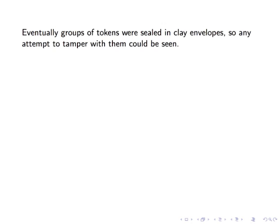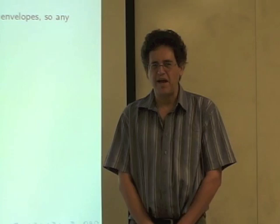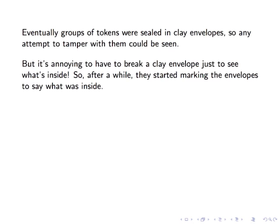But eventually these tokens were sealed in clay envelopes so that you couldn't tamper with them without busting the envelope and becoming visible. So if you wanted to change your mind about how much grain you promised to sell somebody, you couldn't do it anymore behind their back. The only way you could do it is by breaking the envelope and that would be evident. So it's a kind of security system for these tokens.